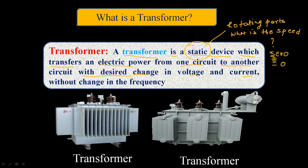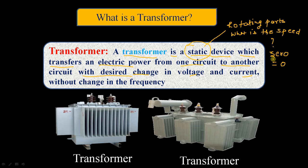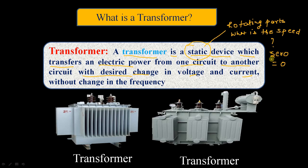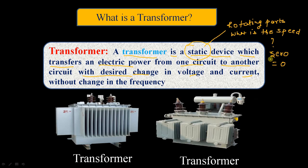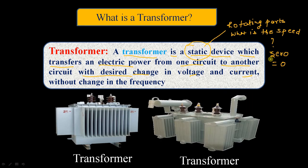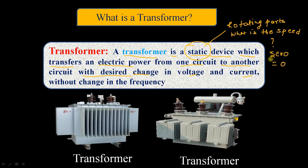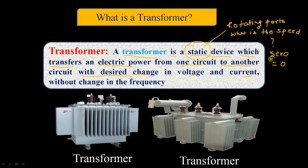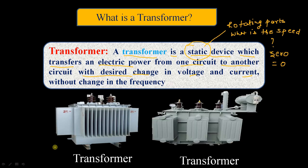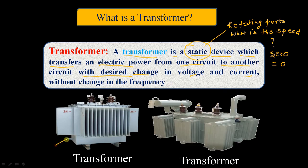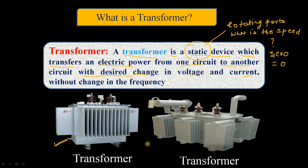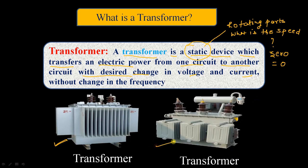This question is very very important. In general they may ask in your practical viva questions: what is the speed of a transformer? The answer is: the speed of a transformer is zero.